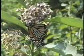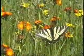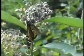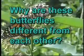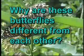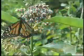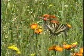This is a monarch butterfly, and this is a tiger swallowtail butterfly. You decide — why are these butterflies different from each other? These butterflies are members of two different species. A species consists of a group of organisms which can successfully reproduce among themselves. Members of the same species possess similar characteristics.